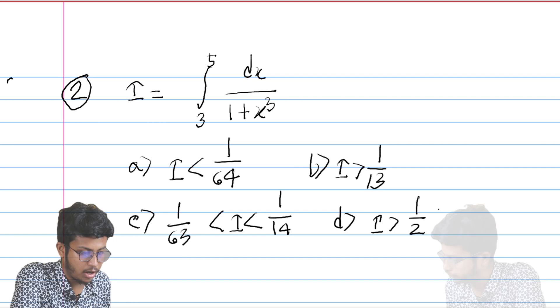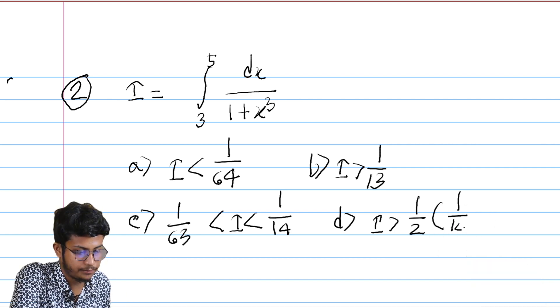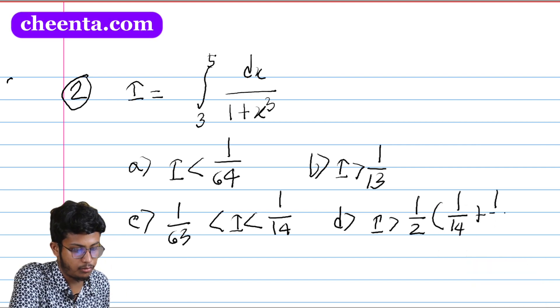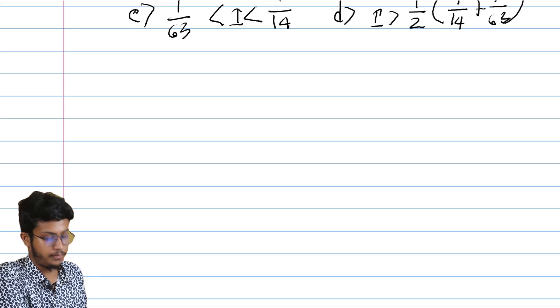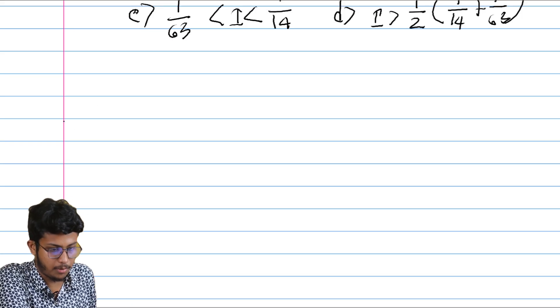And option D says I greater than half of 1 by 14 plus 1 by 63. Okay, so let's try to solve this. Suppose we have a property.